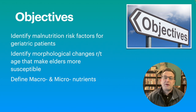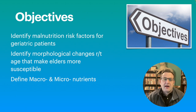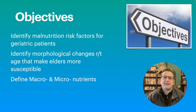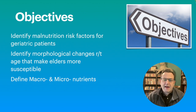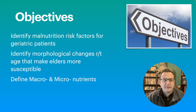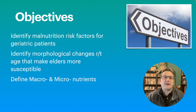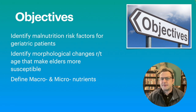So what are we talking about in this particular module? We're going to identify malnutrition risk factors for geriatric patients, identify the morphological changes related to age that make elders more susceptible. Aging itself is a risk factor, and we'll discuss some of why. And we're going to define macro and micronutrients — specifically what we're going to look at within the context of gerontology.